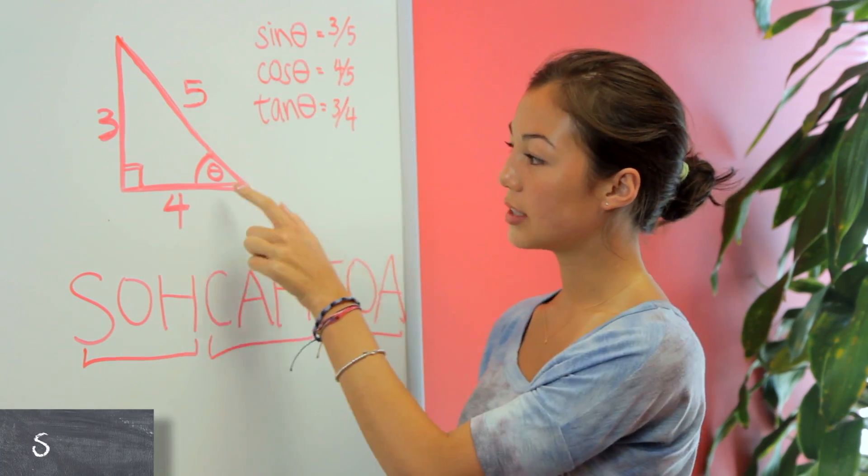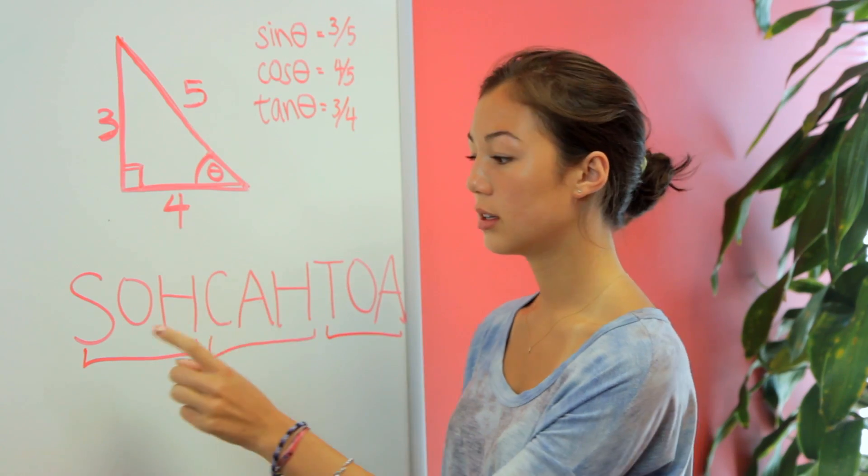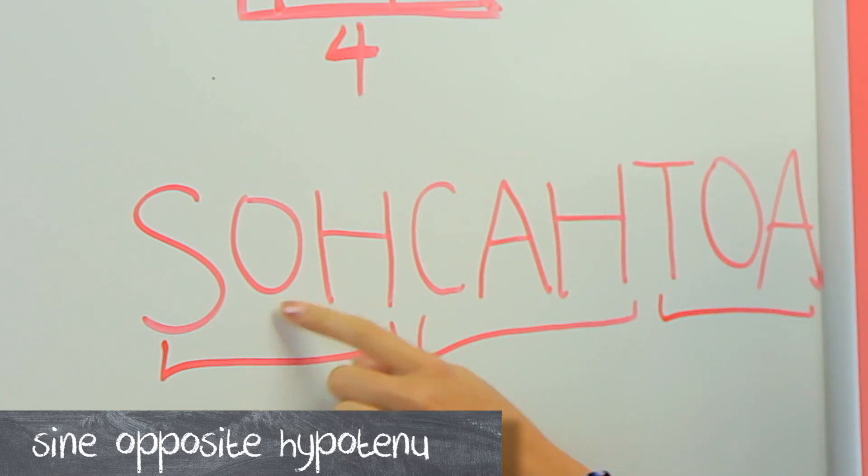So if we're finding the sine of this angle theta, we're going to use what I just talked about to remember sine equals opposite over hypotenuse.